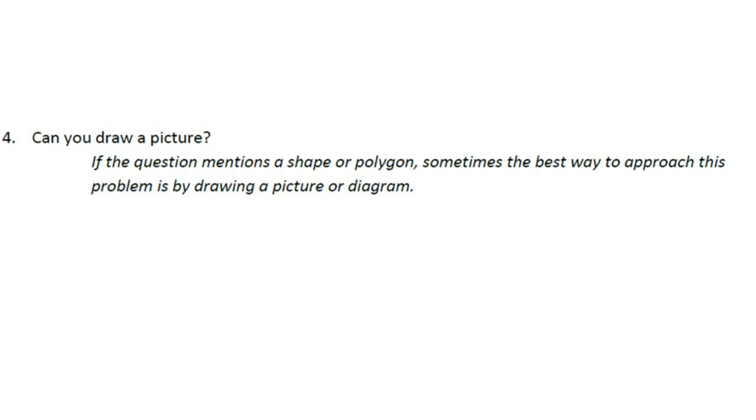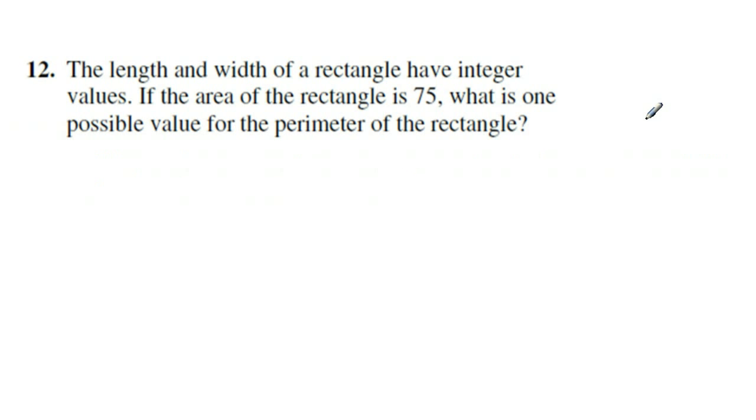The fourth strategy you want to take a look at here is can you draw a picture? So if the question mentions a shape or polygon, sometimes you just have to draw it out and you see what happens. Let's take a look at an example here. It says the length and width of a rectangle have integer values. If the area of the rectangle is 75, what is one possible value for the perimeter? In this case, I'm going to go ahead and draw my shape here. I'm going to draw a rectangle. I'm going to label in whatever I can. It says the area is 75. And we know this is our width. This is our length. And I know that area is equal to length times width.